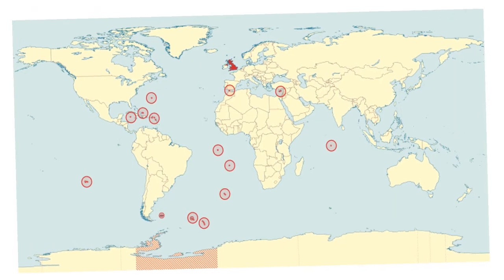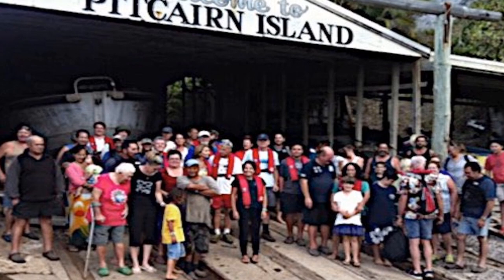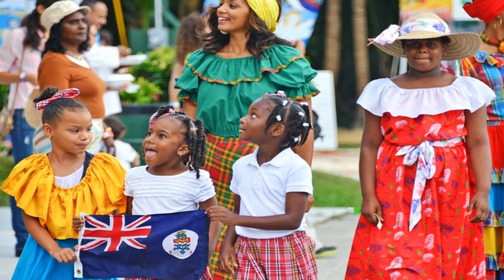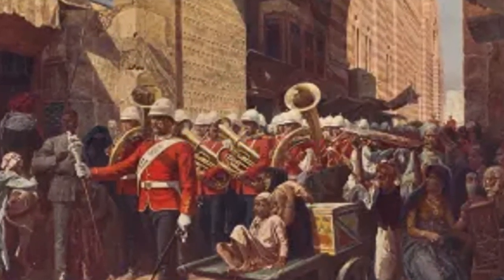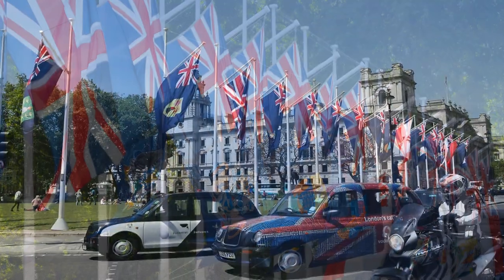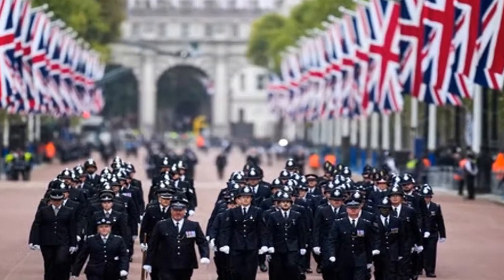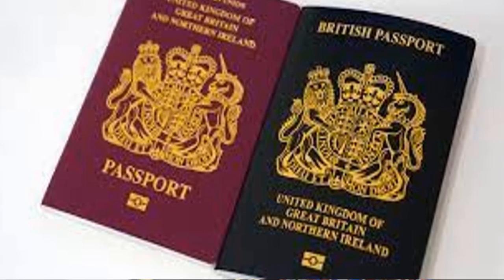Now let's quickly look at the 14 overseas territories. They have an estimated population of 270,000. Pitcairn is the least populated territory with a population of about 50 people, while the Cayman Islands is the most populated territory with a population of about 79,000. These are the last remaining territories of the former British Empire. Permanently inhabited territories are self-governing, while the UK government retains responsibility for defence and foreign relations. All 14 have British monarch King Charles as head of state, and the people, who are British citizens, hold the same British passport.